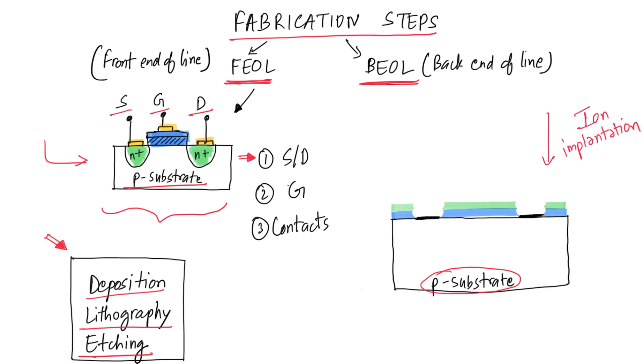To create the source and drain regions, we want to bombard the silicon surface with N-type impurities at high speed. This process is called ion implantation and this helps with the creation of the source and drain region, like this. Next, any remaining photoresist can be easily removed using a certain chemical solution.